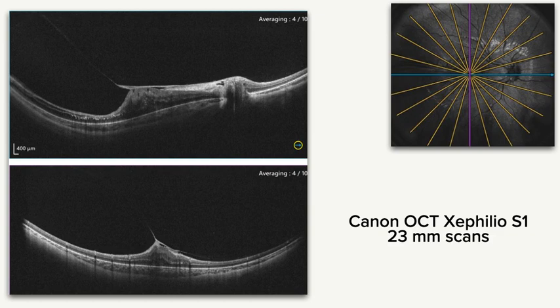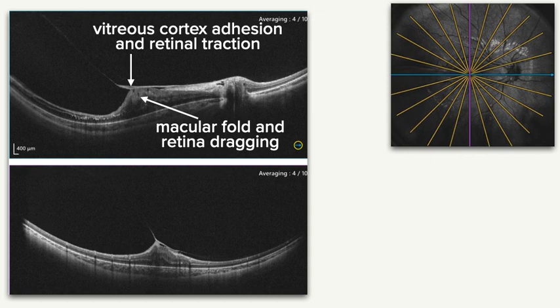The OCT taken with large 23 mm scans with X1 Xefilio by Canon showed the adhesion of the vitreous cortex to the retina with retinal traction creating a macular fold and retina dragging toward the temporal side.